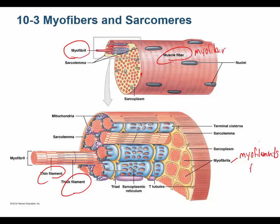Myofilaments come in two flavors: thick and thin. Thick myofilaments are mainly composed of myosin proteins. Thin myofilaments are composed of three different proteins: actin, tropomyosin, and troponin. A myofiber is packed full of myofibrils — each maroon-colored circle you see is a myofibril. Pull one out and you see it is composed of these thick and thin myofilaments.